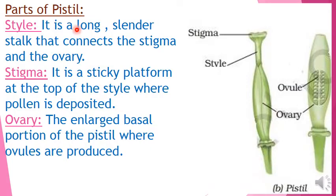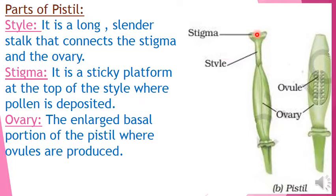Now let us see the female reproductive part, that is the pistil. Pistil consists of four different parts: stigma, style, ovary, and ovule. Stigma is the uppermost sticky platform at the top of the style where pollen is deposited. It is flat in nature and is continuously connected with the style. Style is a tube-like structure. Stigma helps to deposit the pollen grains produced by the male gamete.